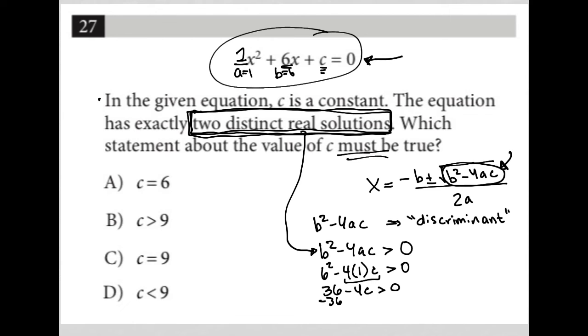I am going to subtract 36 from both sides here. Let's move this way for more space. And I'm going to end up with negative 4C is greater than negative 36. I'm going to simplify this further by dividing by negative 4 on both sides. Whenever you divide both sides of an inequality by a negative number, the inequality symbol changes direction. So this becomes C is less than. Negative 36 divided by negative 4 is positive 9.